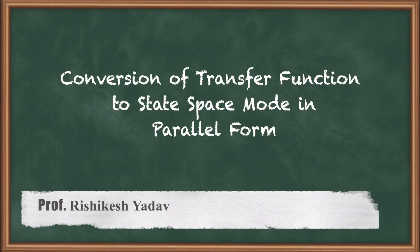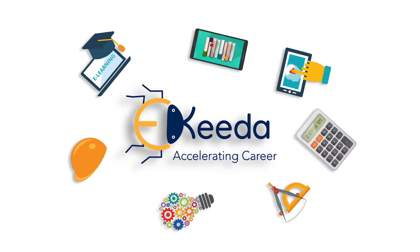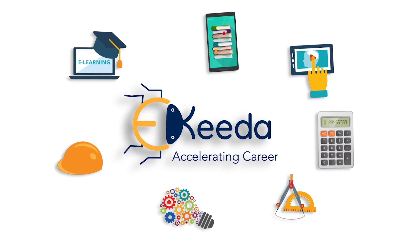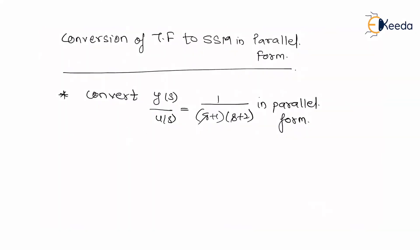Hello friends. In this video we are going to discuss and learn how to convert a given transfer function into state space model in parallel form. Let us consider a given example: y upon u is equal to 1 upon (s+1)(s+2), and I need to convert this problem into parallel form. It is a typical exam problem and it is going to clear the whole concept of converting a transfer function into parallel form.